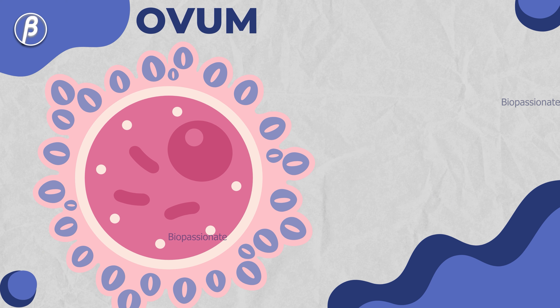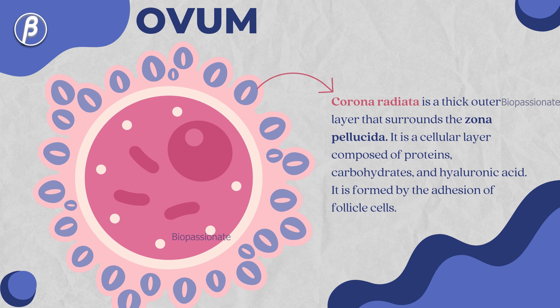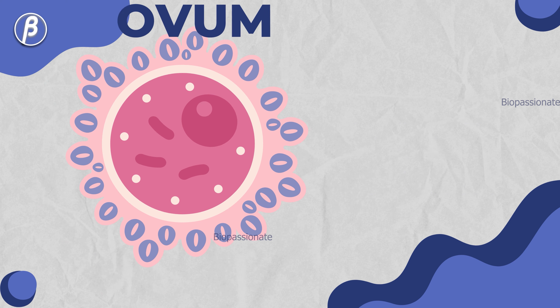Corona radiata is a thick outer layer that surrounds the zona pellucida. It is a cellular layer composed of proteins, carbohydrates, and hyaluronic acid. It is formed by the adhesion of follicle cells.